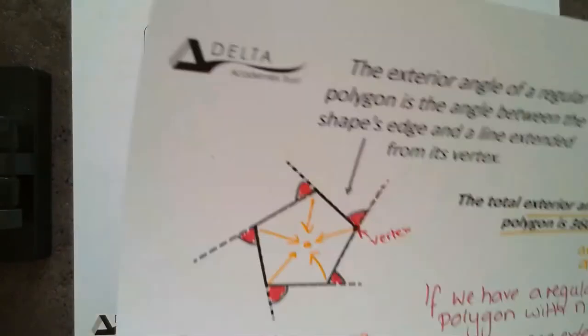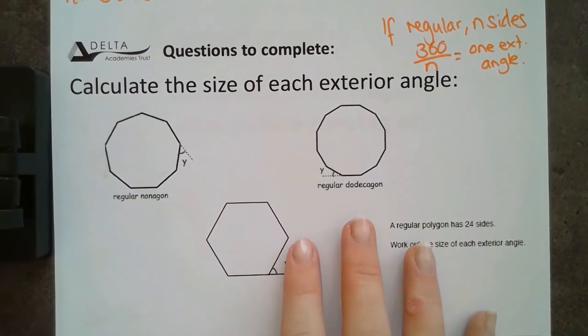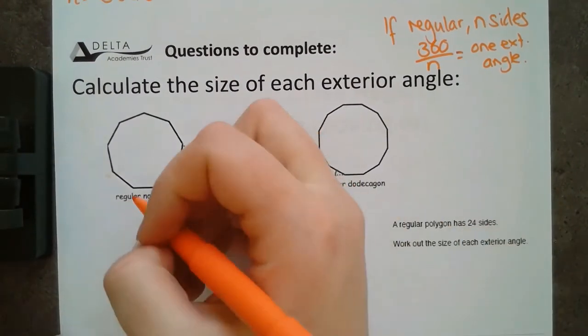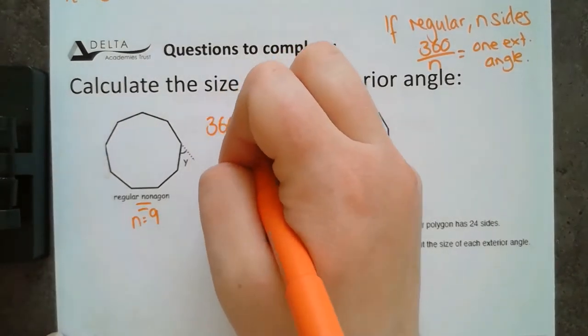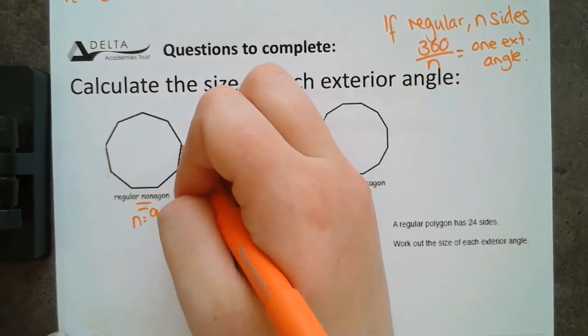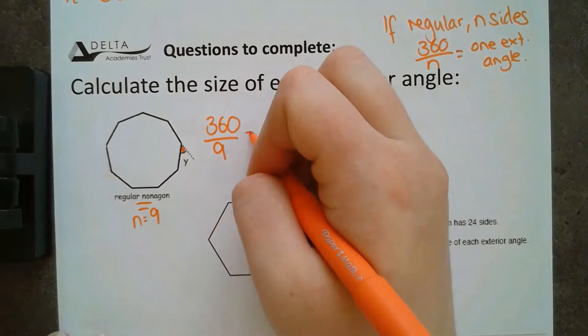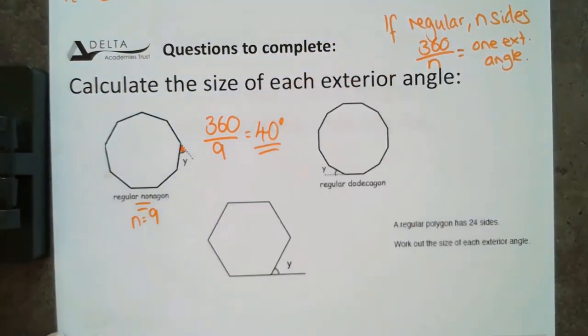I don't think I've got the answers. No, I don't. Okay. So, we'll just go through the answers to these very, very quickly. So, a regular nonagon, we already know that that's got 9 sides. So, N is 9. We're going to do 360 divided by 9 to find the value of this exterior angle Y. 360 divided by 9 gets us 40 degrees for each one of those angles.